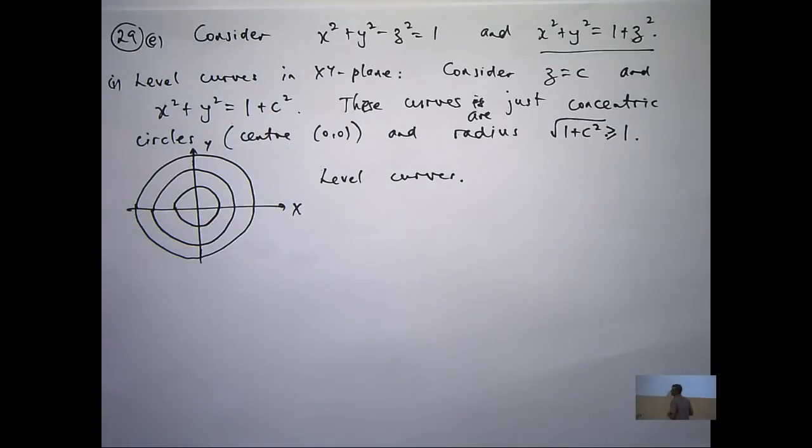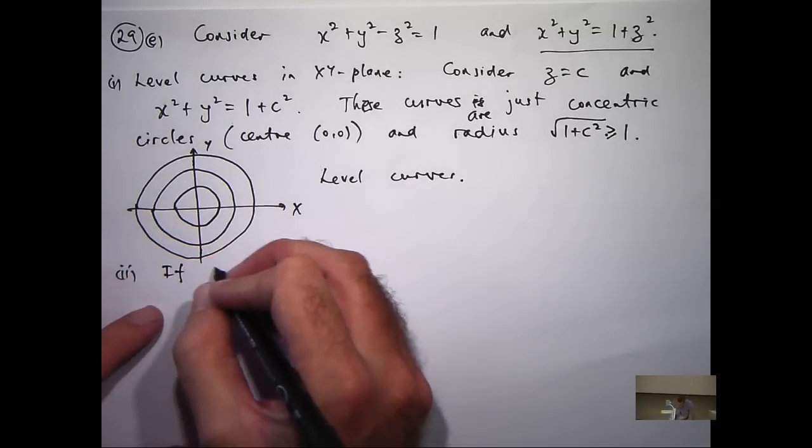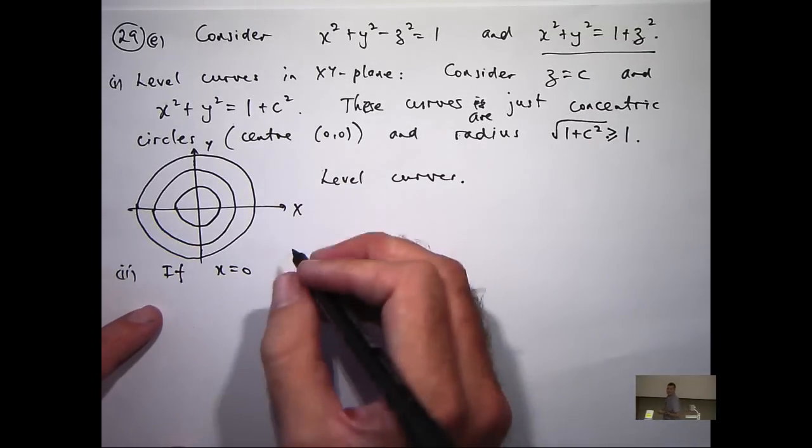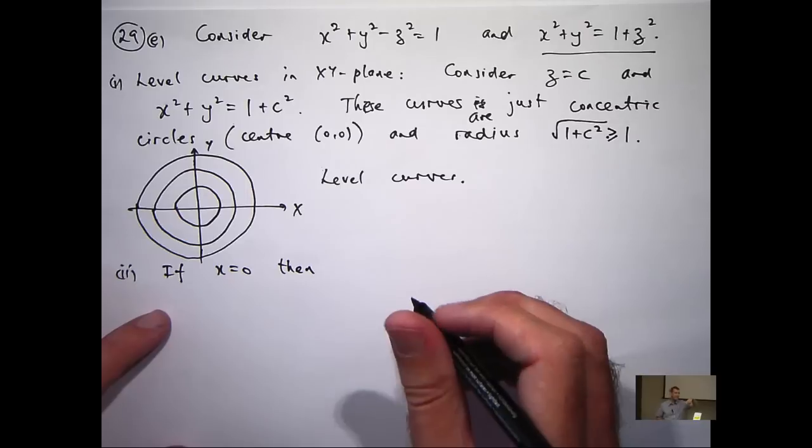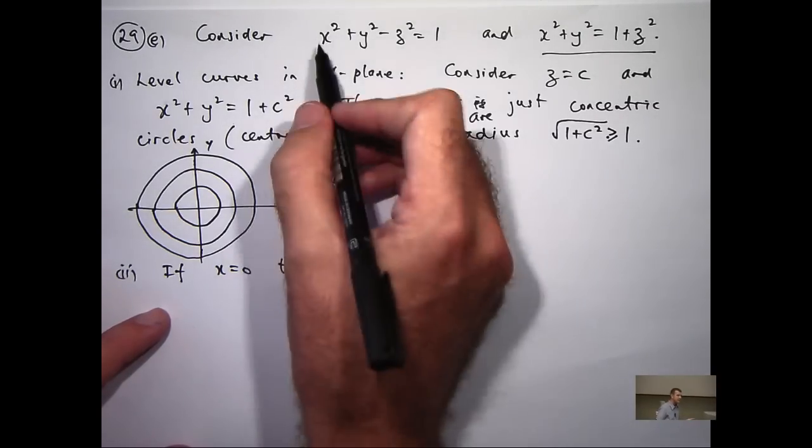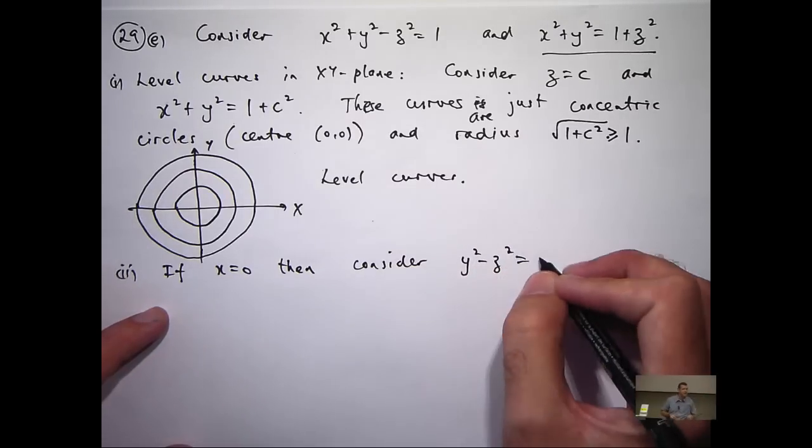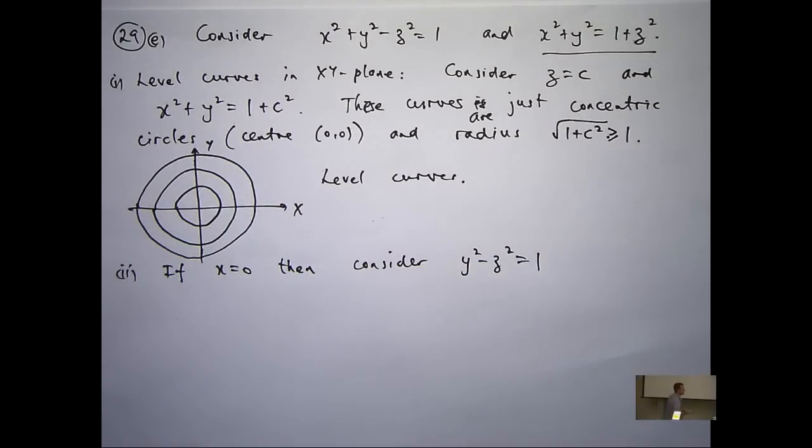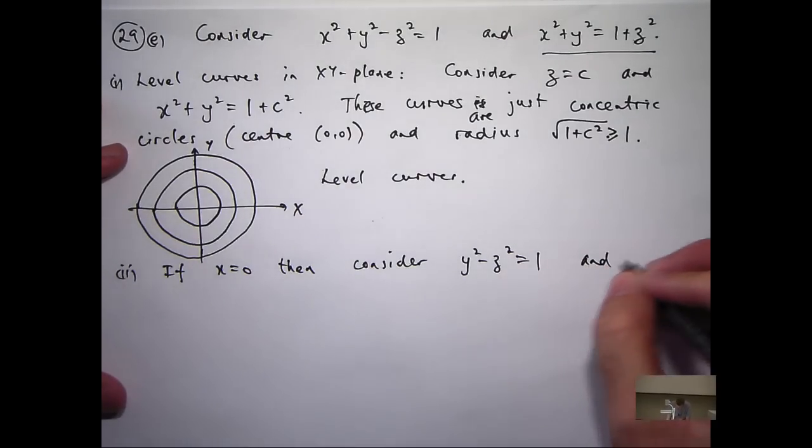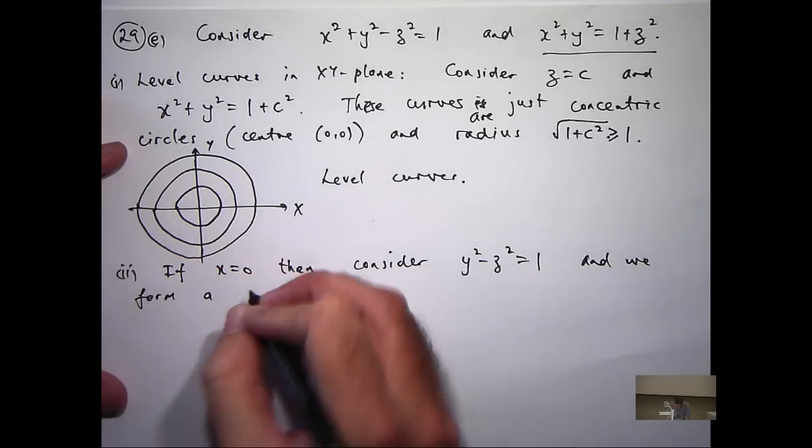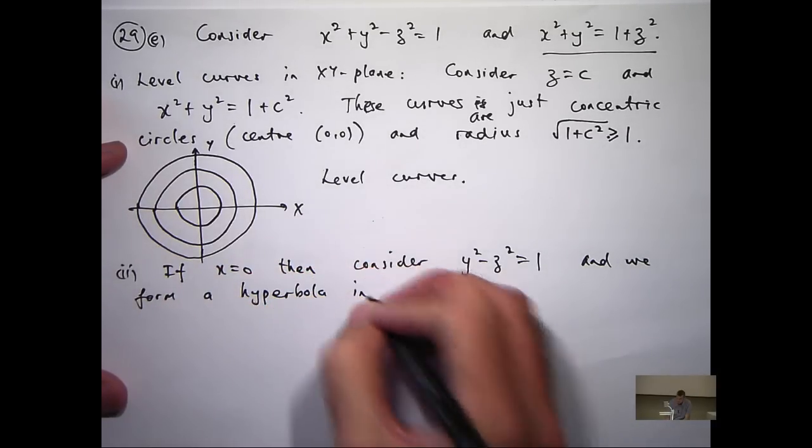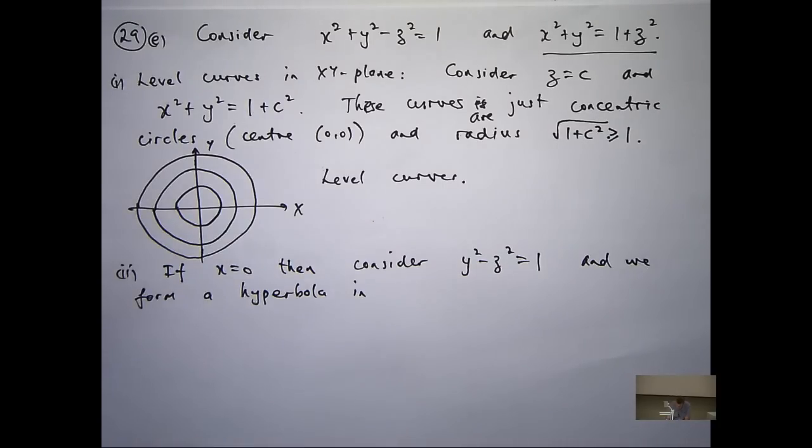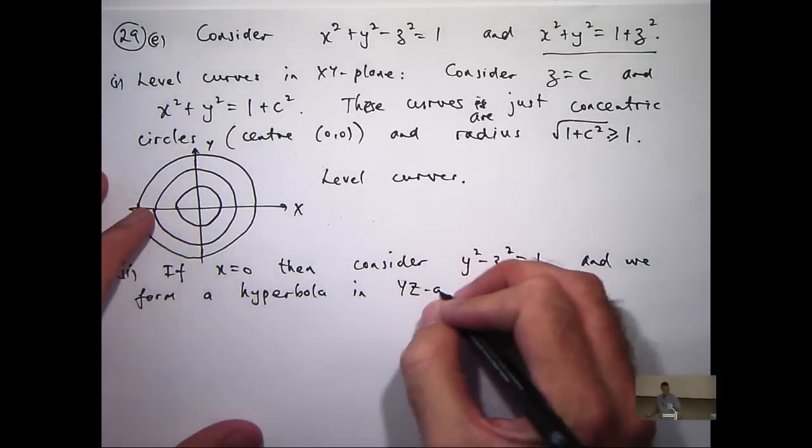So let's now look at the intersections of the surface with some coordinate planes. So I'm just going to choose X to be 0. So, if X is 0, I get Y squared minus Z squared equals 1. So what kind of curve is that, bottom right-hand card? It's going to be some sort of hyperbola, right?